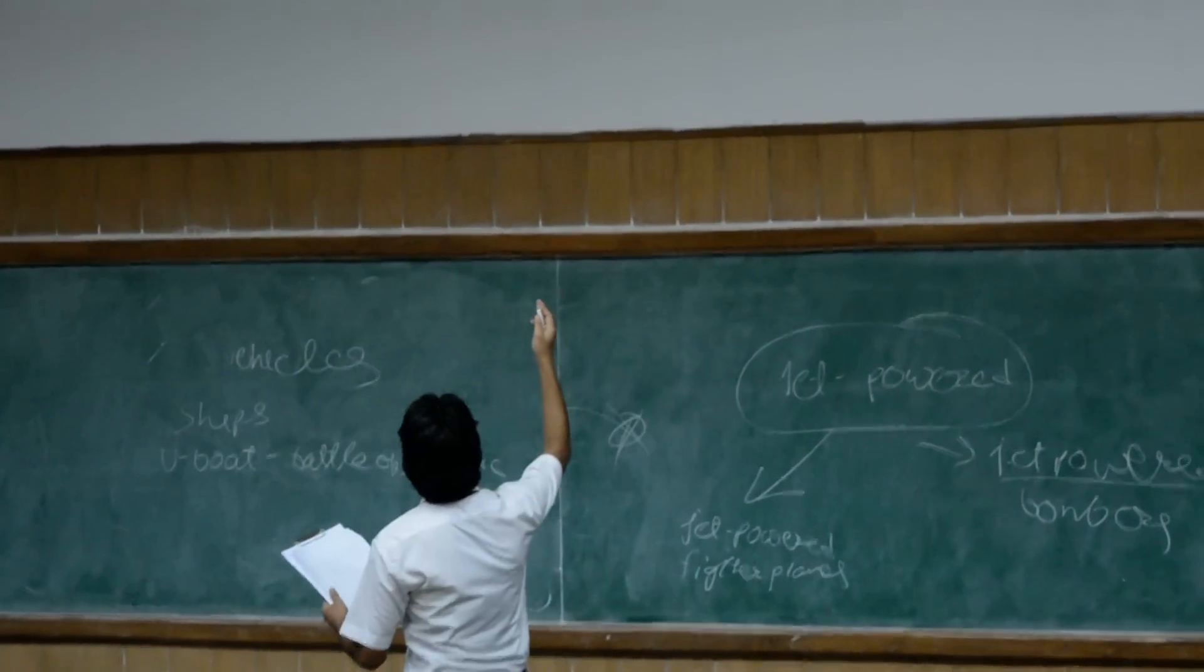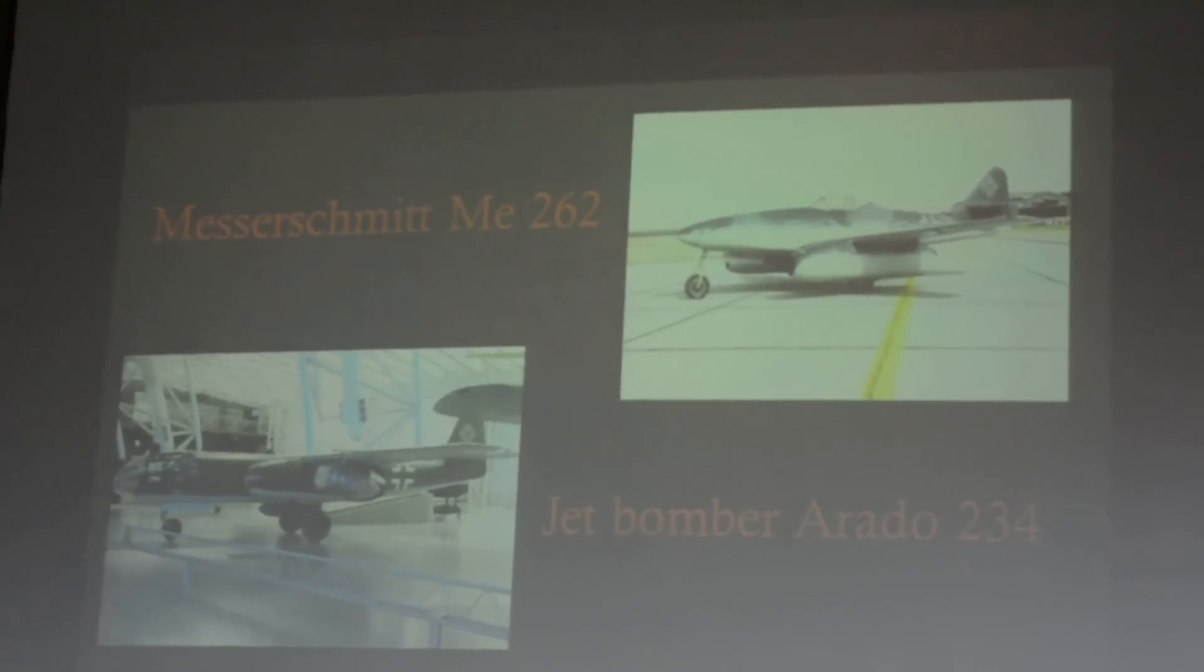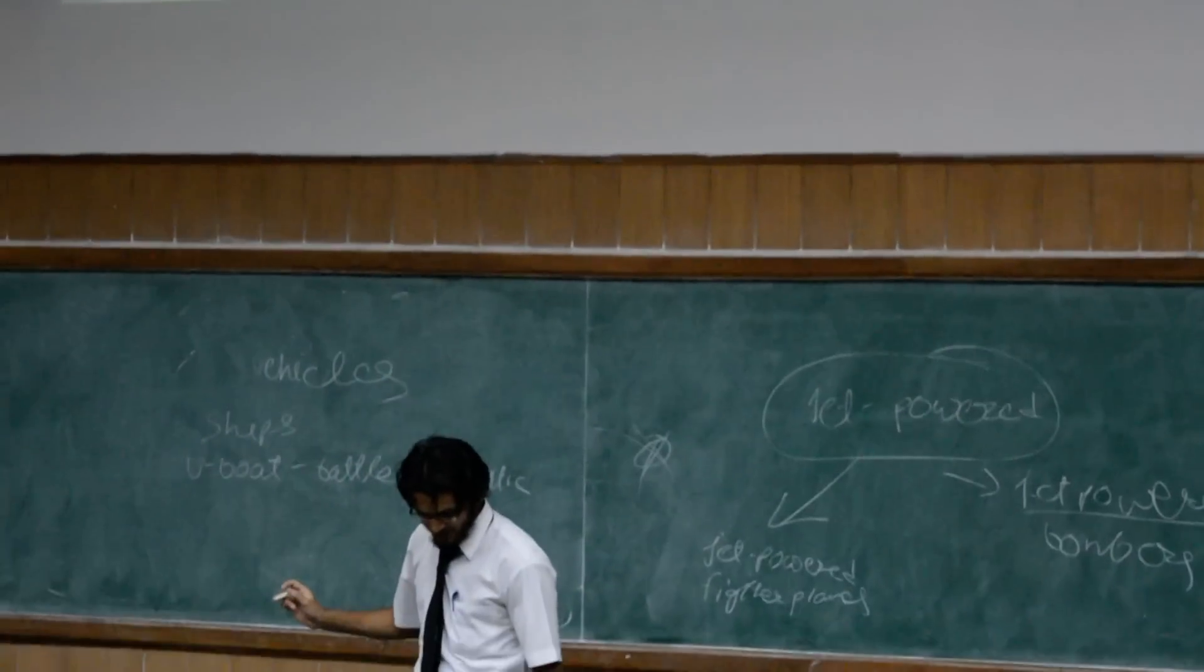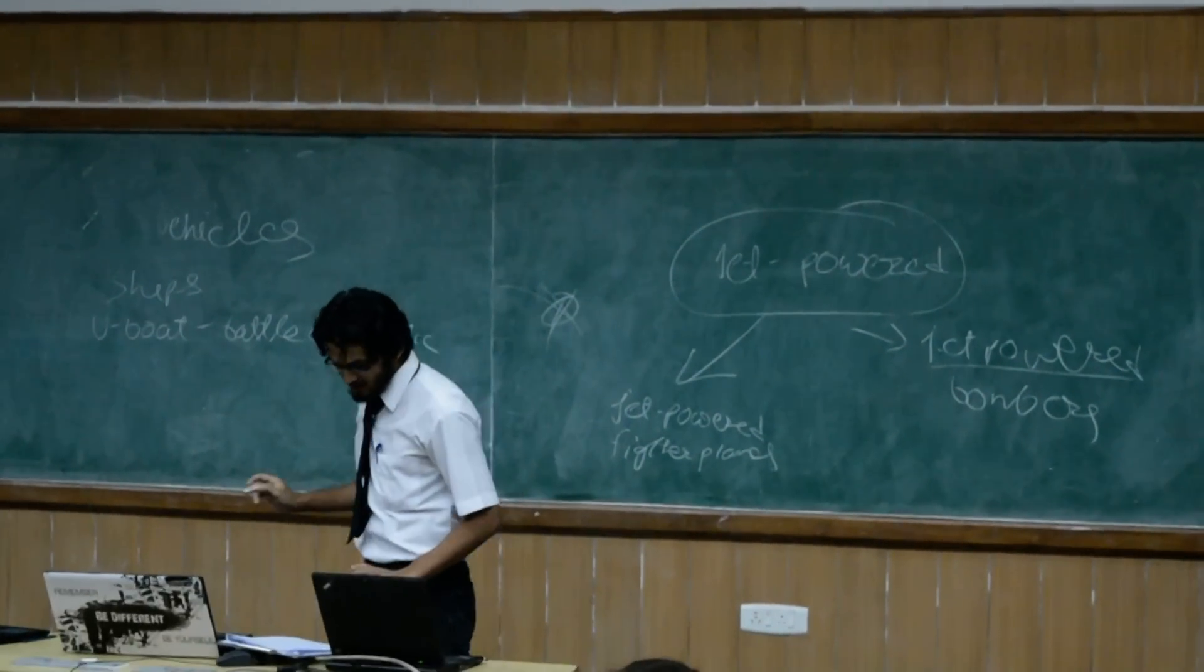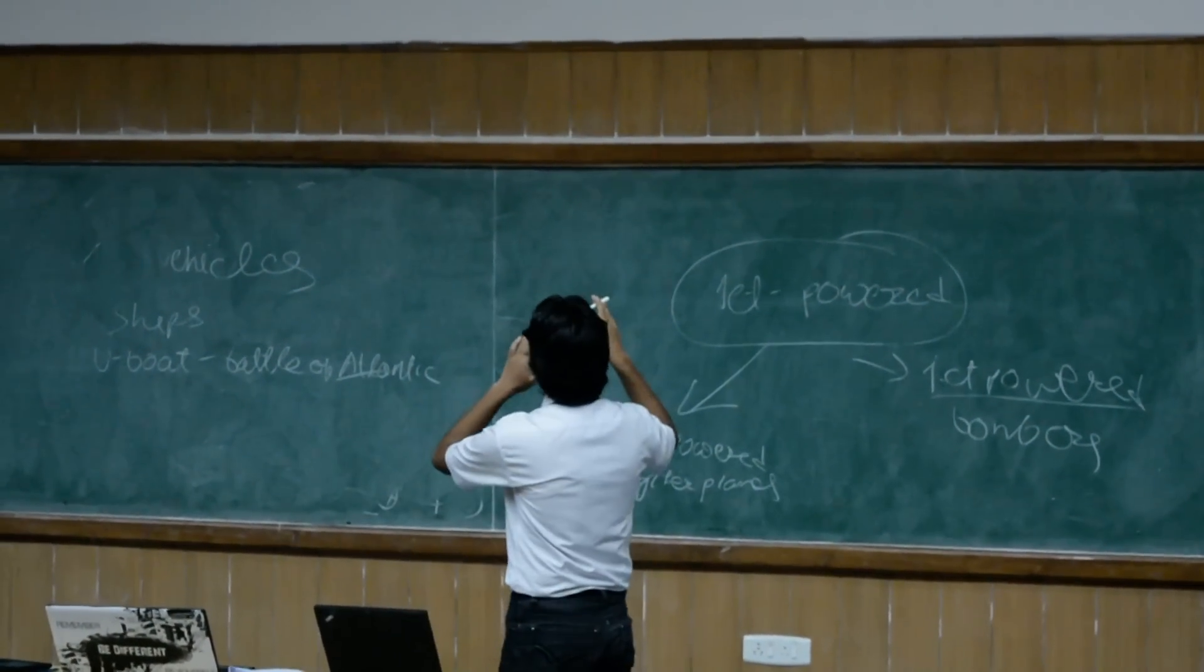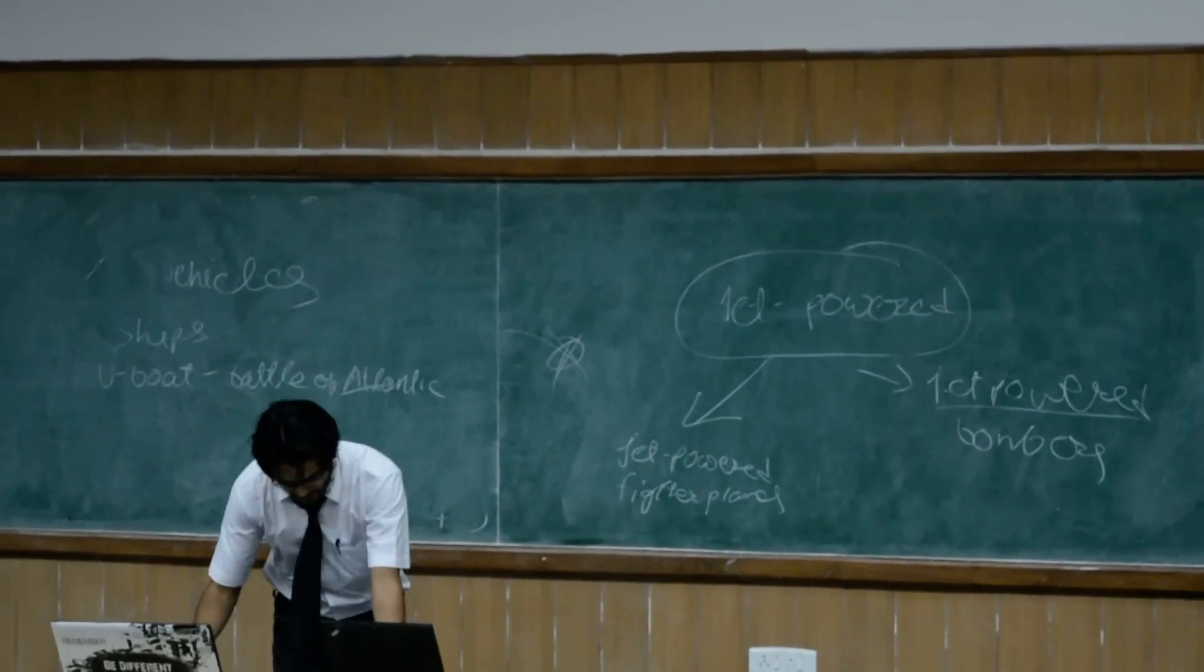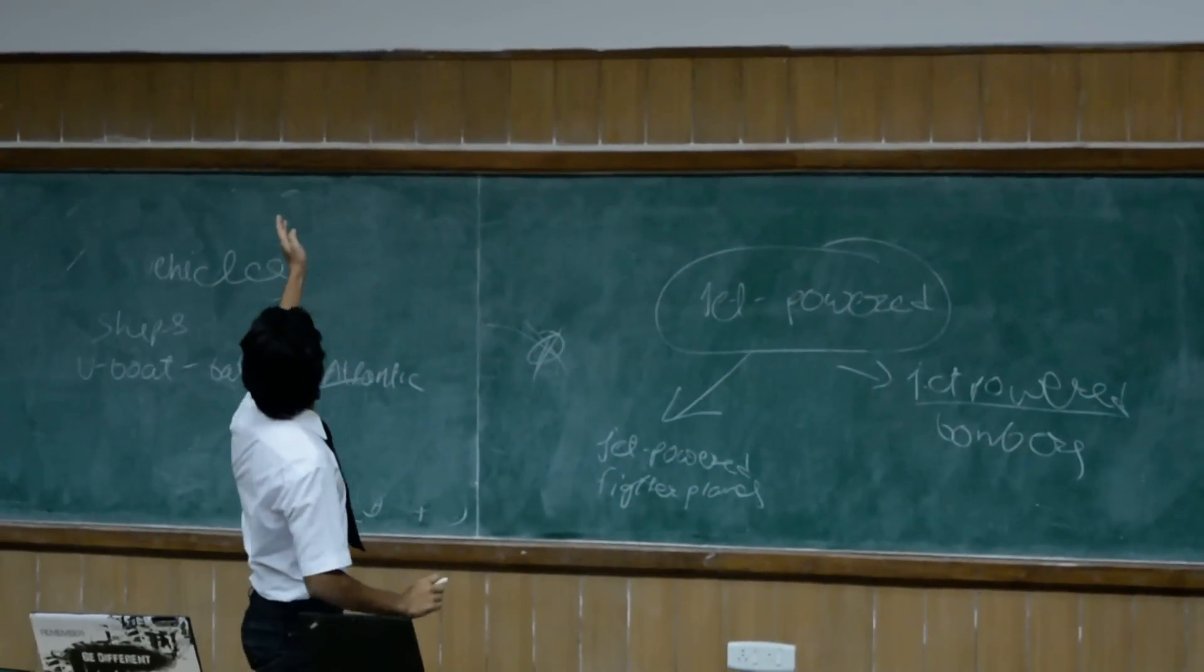We see the Gloster Meteor. It was the first operational jet powered fighter aircraft and it was among the most fastest fighter planes in the allied forces. Its speed was ranked by none other in the allied forces.